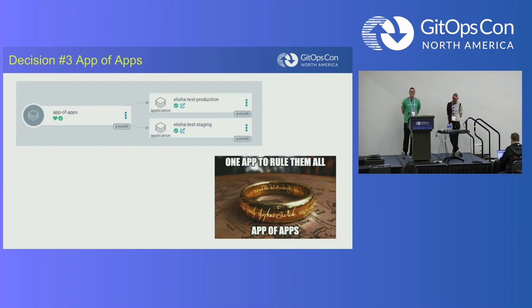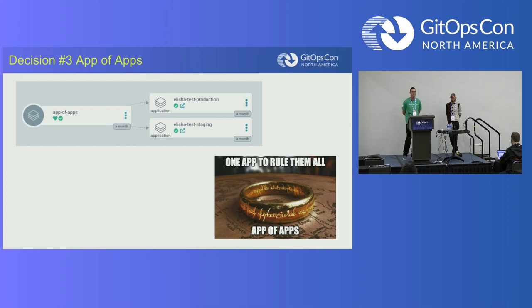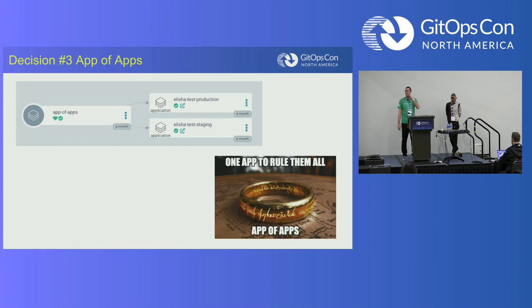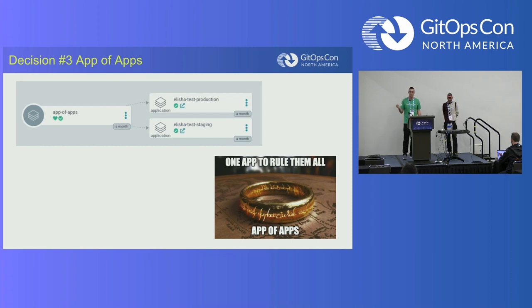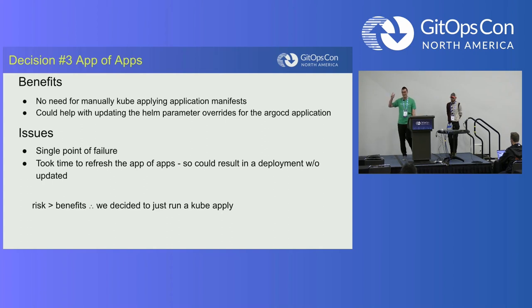Now that we have changes to the Argo CD application manifests, how do you apply those? One idea people may know is the 'app of apps' pattern — an Argo CD application that manages other Argo CD applications. We thought it was a good use case here because those Helm parameter overrides need to be synced before a deployment runs, otherwise you'd get the old Docker image. So app of apps seemed like a great fit.